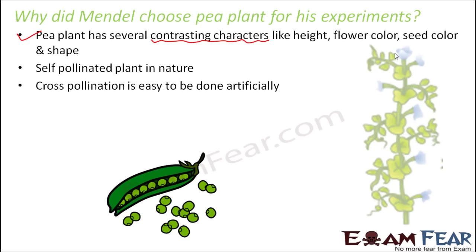Cross-pollination is also easy to perform artificially with the pea plant. Since Mendel's agenda was to see what happens when a tall plant is crossed with a dwarf plant, he needed to perform cross-pollination between two different plants, and with the pea plant this was quite easy. The pea plant also has a short lifespan — what is the advantage of that?